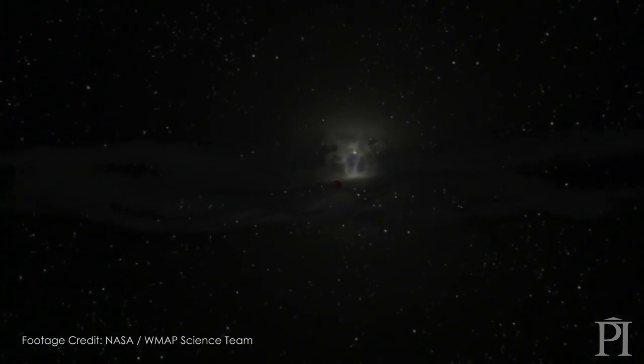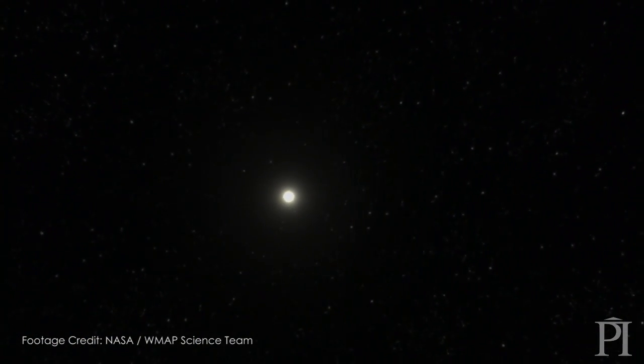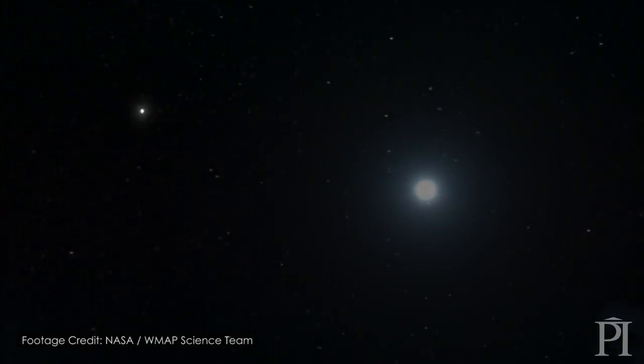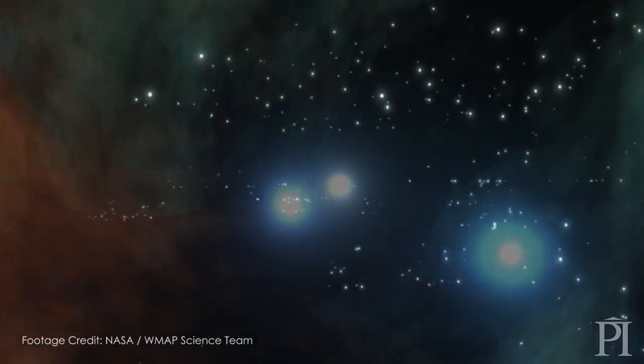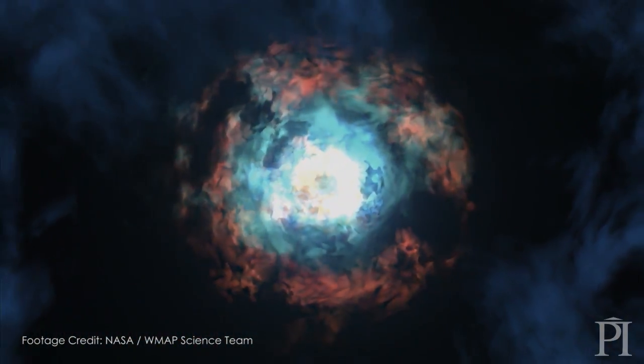We used to think the Earth was all that there is, and then we built telescopes and we could see a bit further, and we realized, oh, there's other planets, and eventually we realized that those planets orbit around the sun, and there are other suns. So there's this evolving hierarchical picture of structure in the universe, and it seems that it just gets bigger the better we can look out.